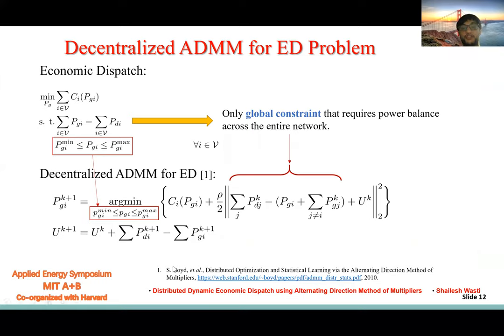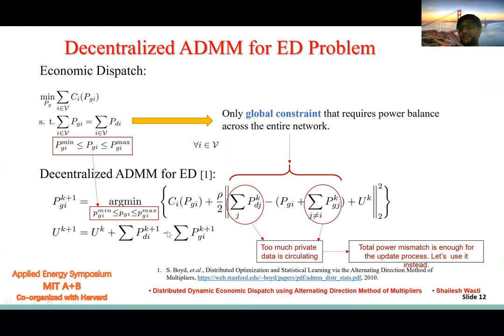This is the ADMM implementation of economic dispatch. We see the dual updater that adjusts the dual variable to clear the market, which is to ensure power balance of the network.